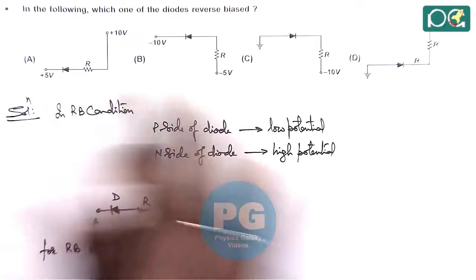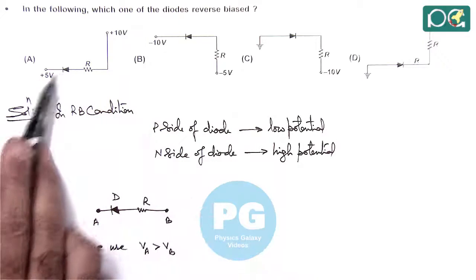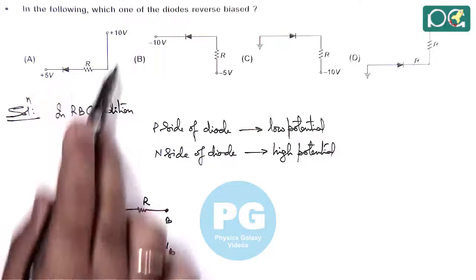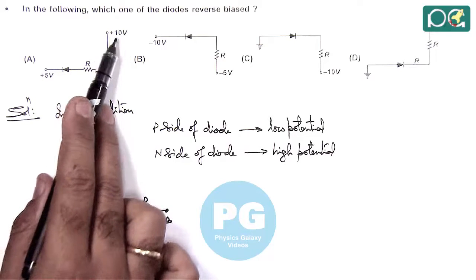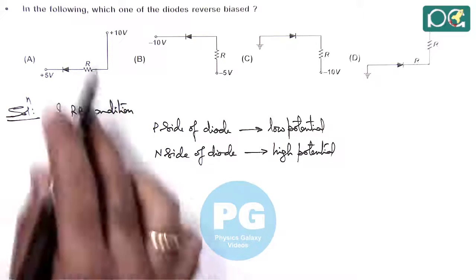If we compare the four options, in option A we can see the N side is at 5 volts and the P side is at 10 volts. So this is forward bias because V_B is higher.